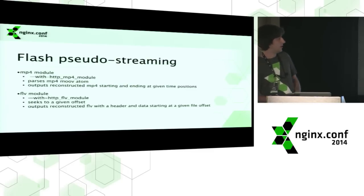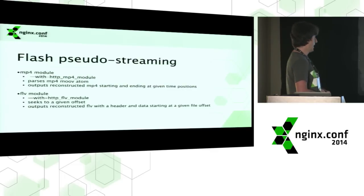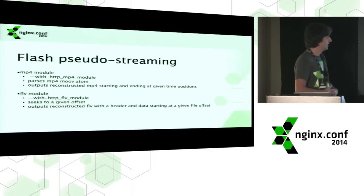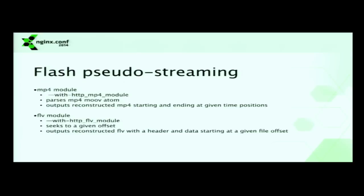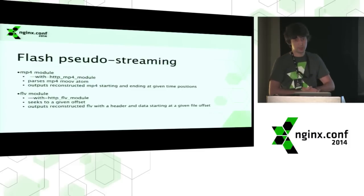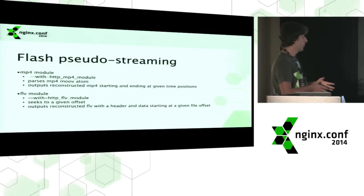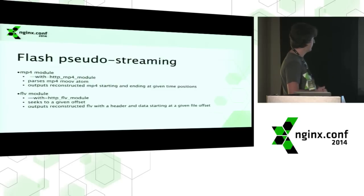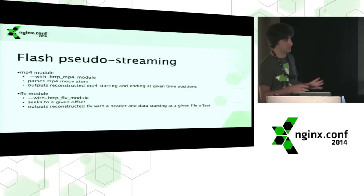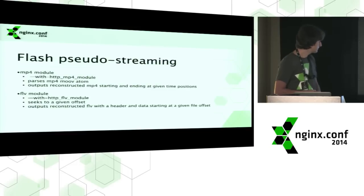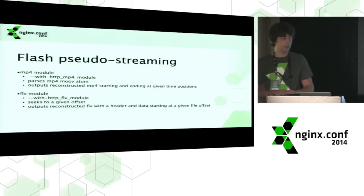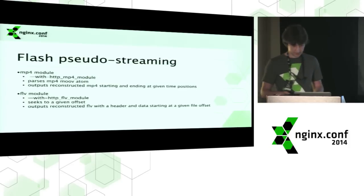The MP4 module is not built by default and you have to add this option when configuring Nginx. This module parses the MP4 metadata and outputs a reconstructed MP4 with samples starting at a given time offset, which is passed as an argument. The FLV module does something similar and is also not built by default. It outputs a reconstructed Flash video file with its data starting at a given file offset — not a time position, but a file offset. This is different from the MP4 module.